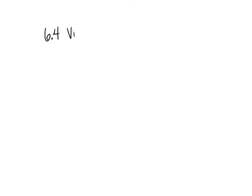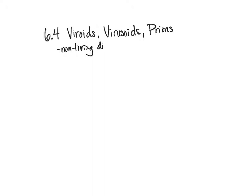In chapter 6.4, we are going to talk about viroids, virusoids, and prions. The reason they are in chapter 6 with viruses is that they are quite similar to viruses in that they are non-living. They are non-living disease agents — they do cause disease depending on which ones we're talking about, but they are still non-living, similar to viruses.